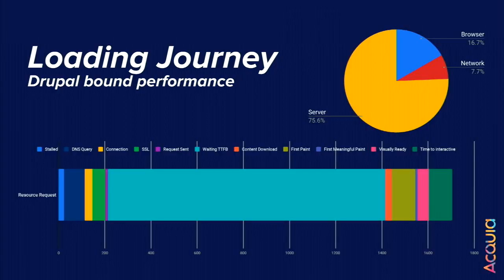From a loading journey standpoint — and some of the text here can be really small to read — this is looking at the holistic end-to-end journey of trying to render one of these page views. You've got things like stalling because the browser's not ready, doing a DNS query lookup, making the connection, establishing SSL, sending the request, waiting for that time to first byte — the big blue teal thing — downloading the content, getting the first paint on, first meaningful paint, becoming visually ready, and finally having a time to interactive.